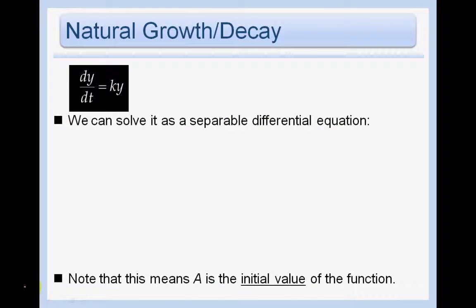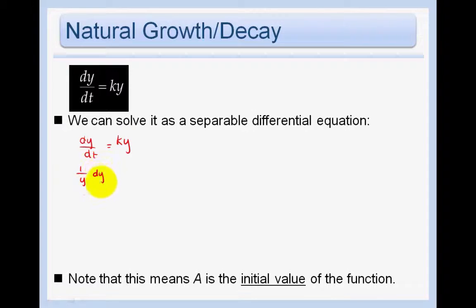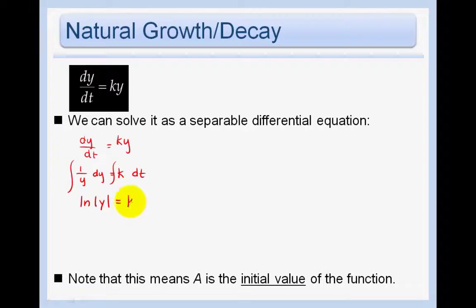If we have dy/dt equals ky, we can solve it as a separable differential equation based on what we learned in the last section. We get all the y stuff on the left and everything else on the right, then take the antiderivative of both sides. The antiderivative of 1/y is ln|y|, and the antiderivative of k is the constant kt plus c. Then we do e to both sides.